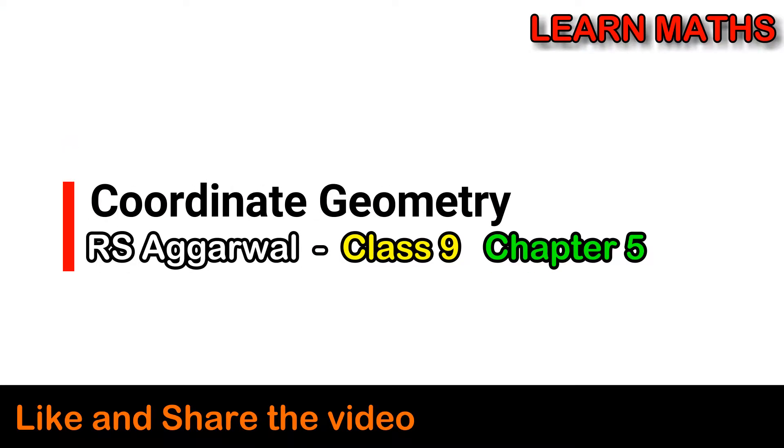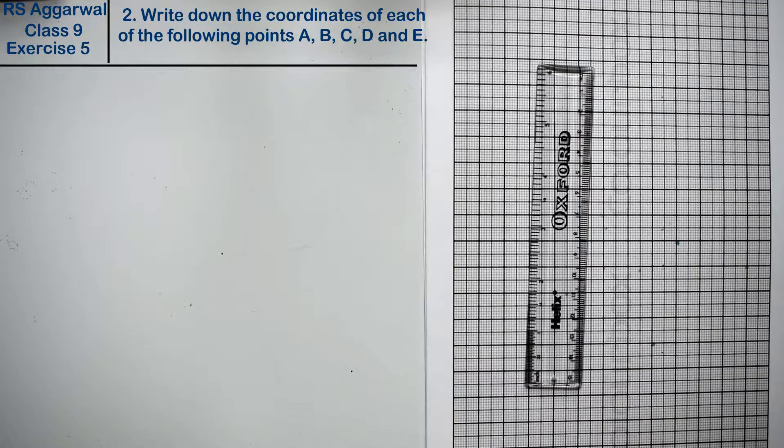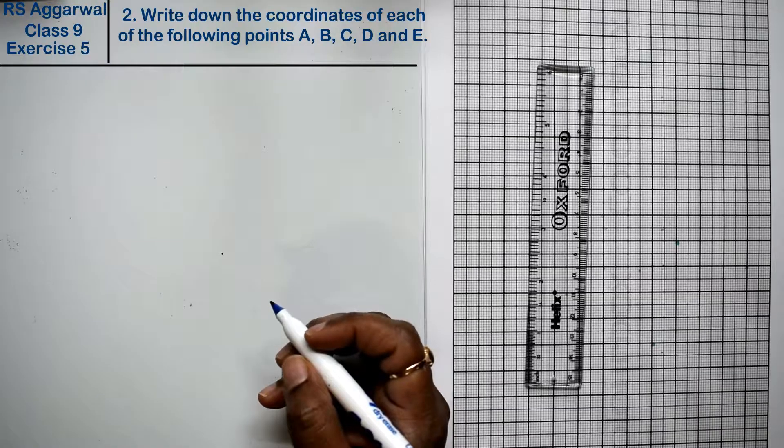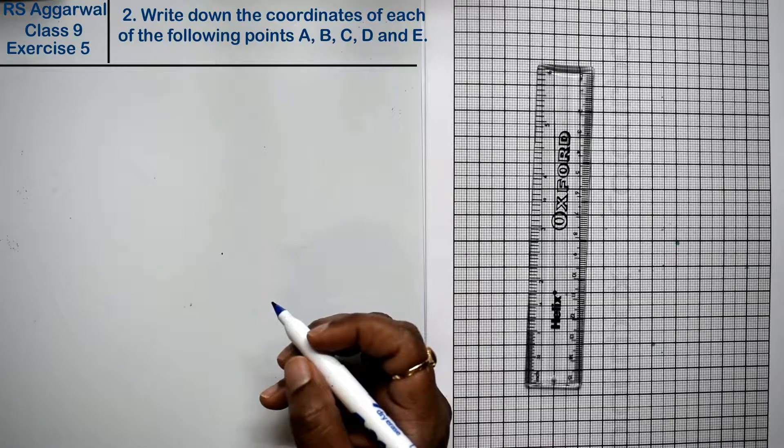Let's do question number 2 of exercise 5, that is coordinate geometry. Question number 2 is write down the coordinate of each of the following points A, B, C, D, and E. Friends, we have a graph paper and we will take all the points from the right rings.